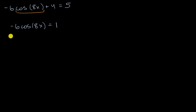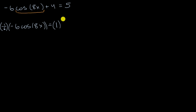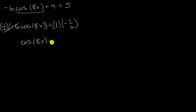Now I can multiply both sides of this equation by negative one sixth, so I have a one in front of the cosine. That gives us cosine of eight X is equal to negative one sixth.